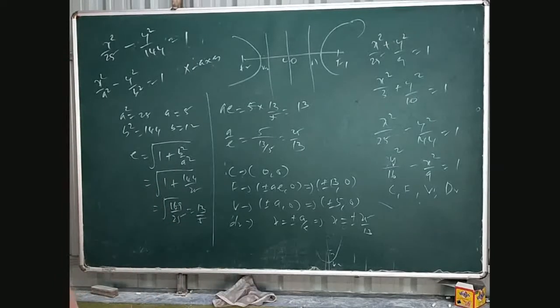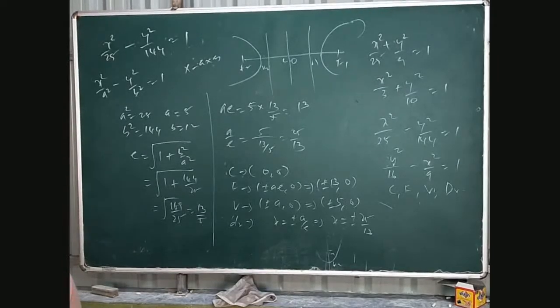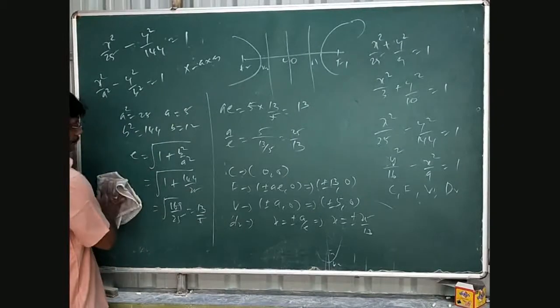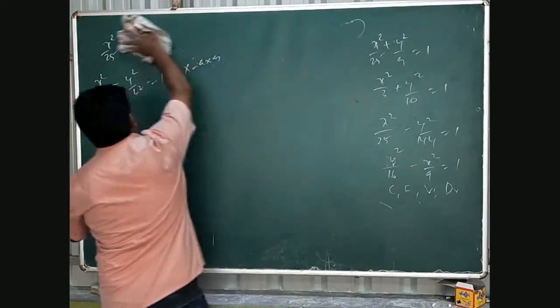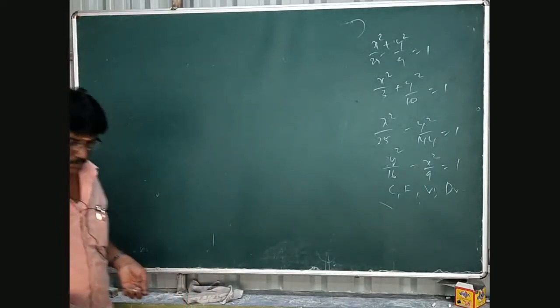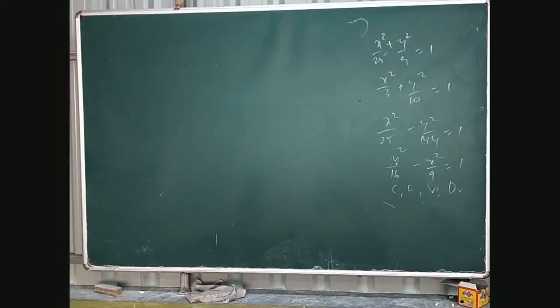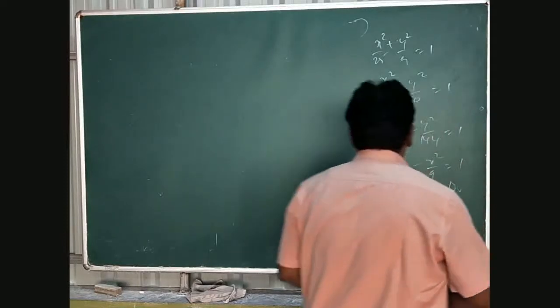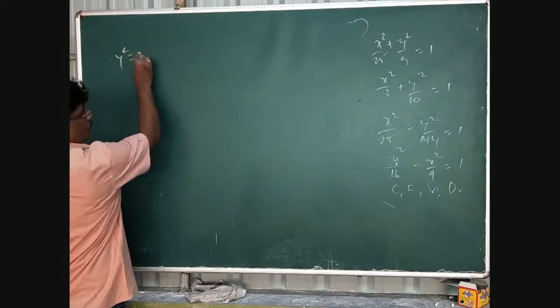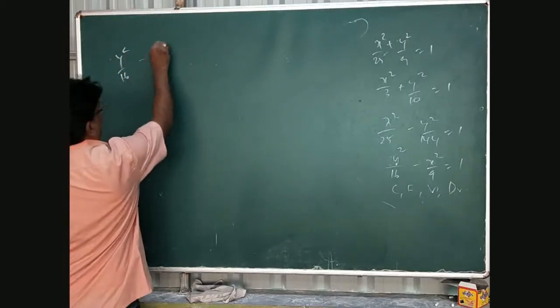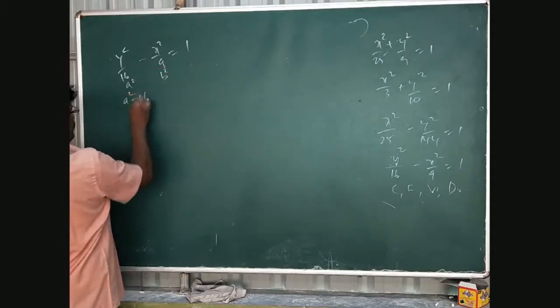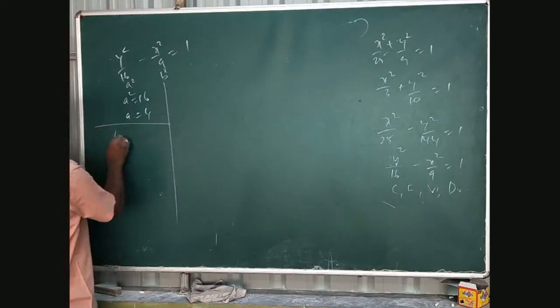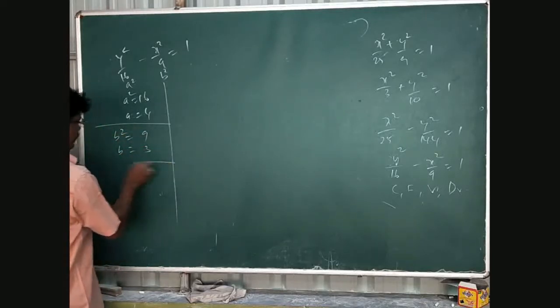Next, fourth subdivision. Now we're going to do the last sum. This is given y squared by 16 minus x squared by 9 equal to 1. So this is a, this is b. So a squared equal 16, a equal to 4, b squared equal to 9, b equal to 3.